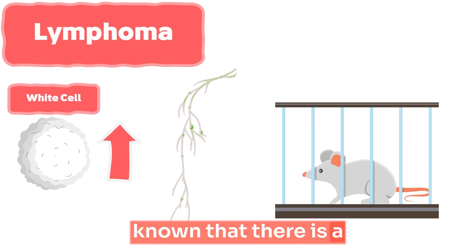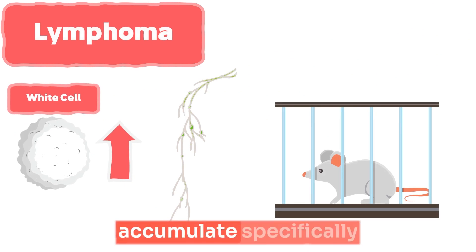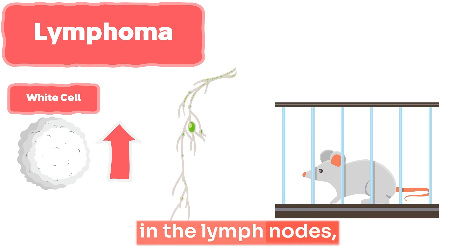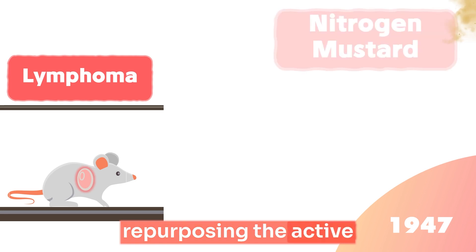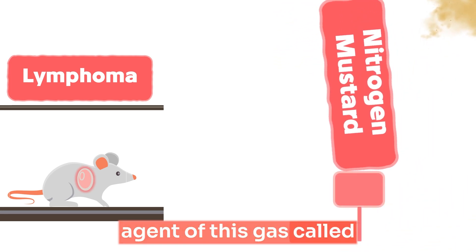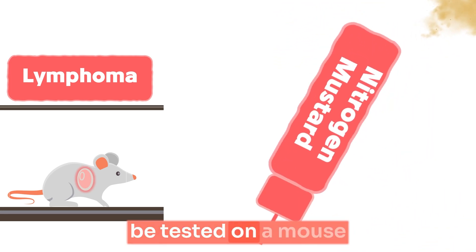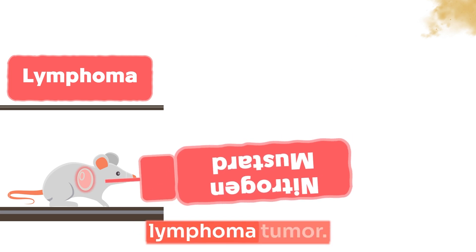Back then, it was well known that there is a disease characterized with increased white blood cells. Those white blood cells accumulate specifically in the lymph nodes, causing a form of tumor called lymphoma. Researchers thought of repurposing the active agent of this gas called nitrogen mustard to be tested on a mouse with a transplanted lymphoma tumor.